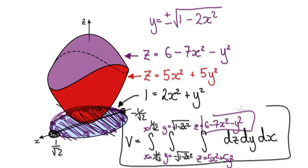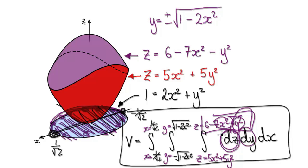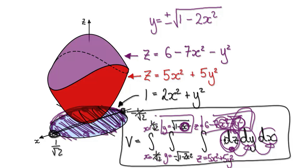Notice a useful pattern here. When you're looking at dz, you have two dimensions — x and y — in the limits. When you jump to dy, you lose one dimension, so the limits are just in terms of x. When you jump to dx, you lose another dimension, so there's no x or y — it's just constants. Each time you jump an integration variable, you lose a dimension. This pattern helps you remember how to set up triple integrals.